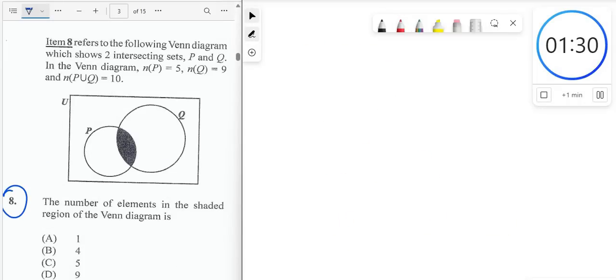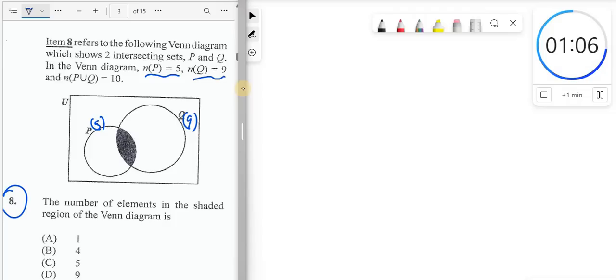All right, so we're looking at question number 8. Item 8 refers to the following Venn diagram, which shows two intersecting sets, P and Q. In the Venn diagram, the number of elements in P is 5. The number of elements in Q, or in set Q, is 9. So we have 9 elements in this one, and we have 5 in this one.